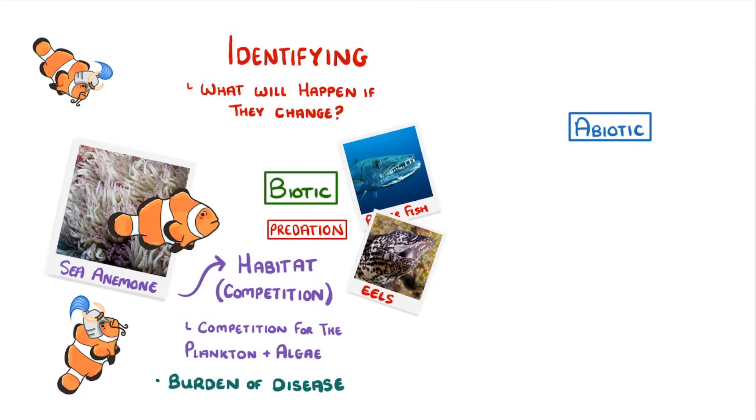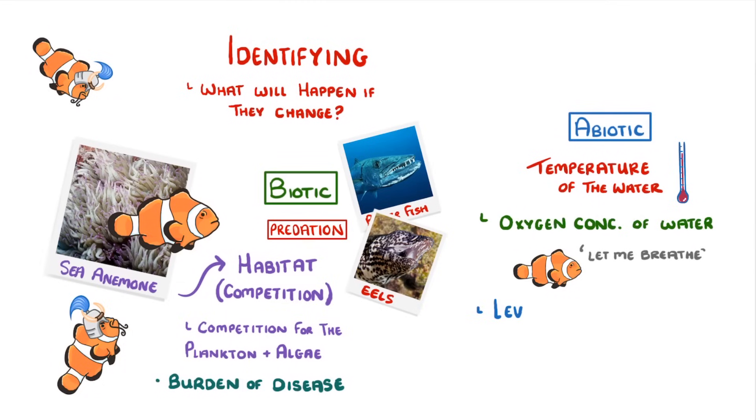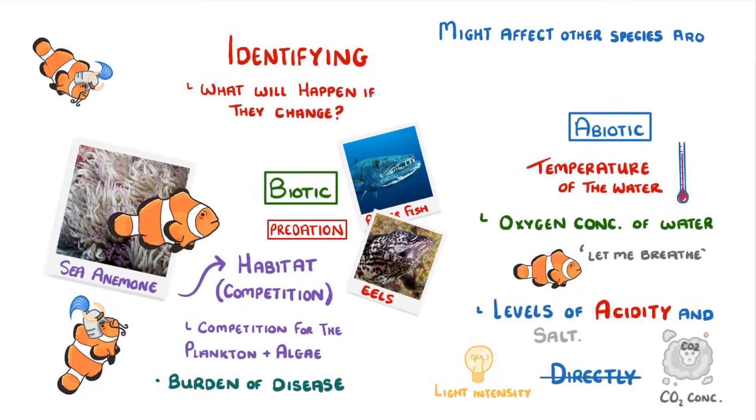Then when it comes to the abiotic factors, we can think of the temperature of the water which might change throughout the day or year, the oxygen concentration of the water, and also the levels of acidity and salt in the water. Then even though factors like light intensity and carbon dioxide concentration might not affect the clownfish directly, they might affect other species around them like the sea anemone, which will in turn affect the clownfish.